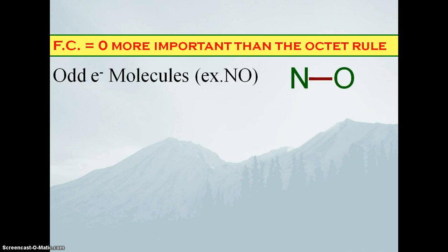The first notable exception of the octet rule is what we're going to call odd electron molecules, meaning the total number of valence electrons is an odd number. If it's an odd number, then it's physically impossible to give everybody eight electrons. So let's consider nitrogen monoxide. Nitrogen has five valence electrons, oxygen has six valence electrons, for a total of 11. So we follow our guide for drawing those structures.